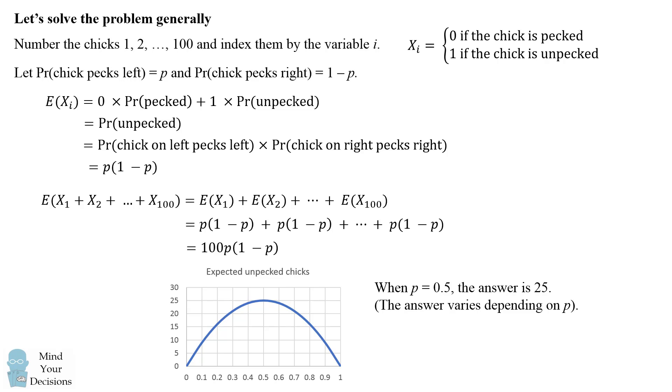But the answer does depend on the variable p. So this is the more general and what I would consider to be the formal problem solving to this question, which was a little bit vague. But nevertheless, if you were in a competition, you would have to guess that the probability was 50% to go left to right. And you would get to the answer of 25.